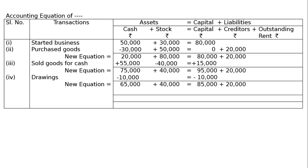Transaction five: rent outstanding rupees 2,000. Outstanding rent is an expenditure as well as a liability. There is no impact on cash or the asset side. It will reduce capital by 2,000 and increase outstanding expenses — that is, outstanding rent — by 2,000.